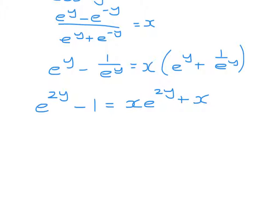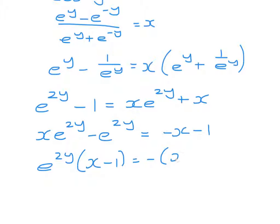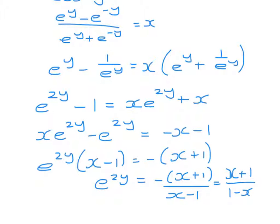So we have x e to the 2y minus e to the 2y equals minus x minus 1. e to the 2y upon x minus 1 equals minus x plus 1. So e to the 2y equals minus x plus 1 all over x minus 1, which is x plus 1 all over 1 minus x.